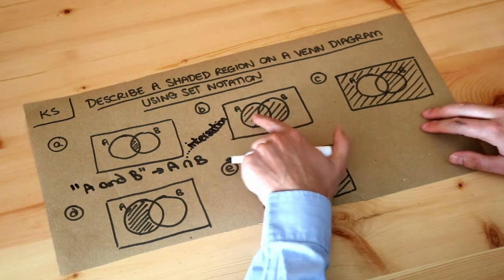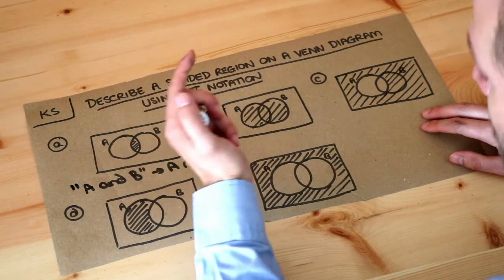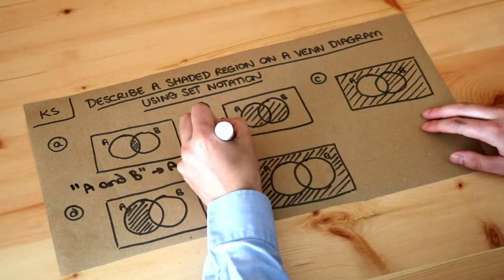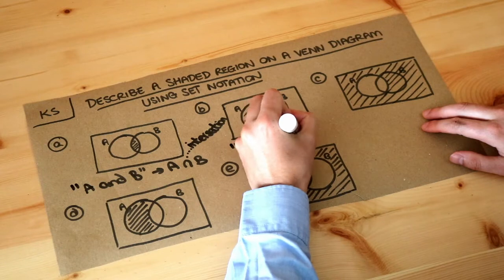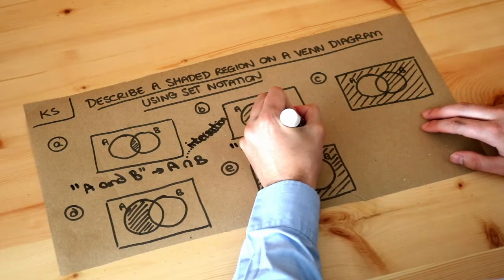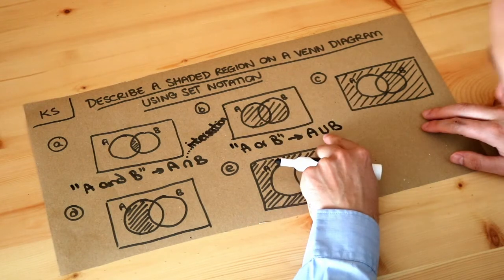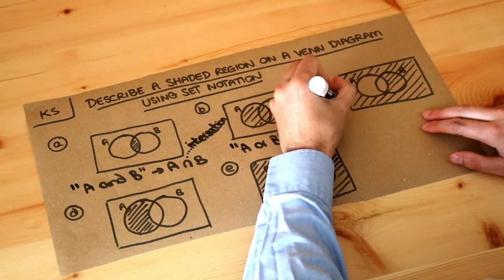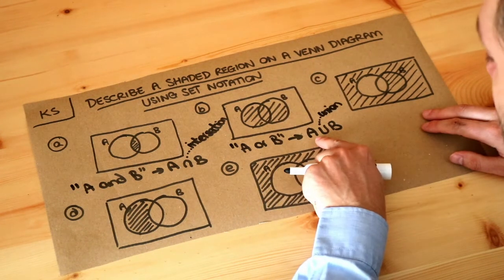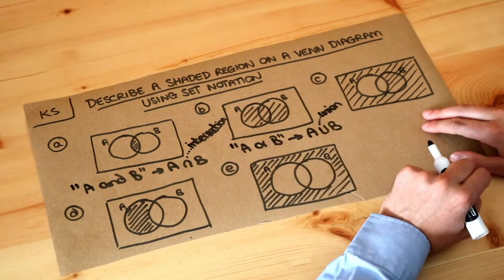What about the second one? Well we've shaded here everything that's either in A or in B or in both, so we want anything that is in A or in B. The way we write it is A union B. This is known as the cup symbol, and it represents the union of two sets - all the things in A or in B - and we get this kind of nice figure of eight shape.